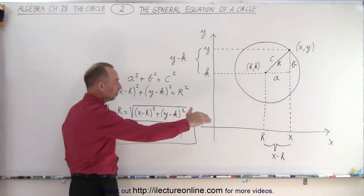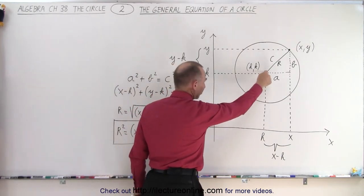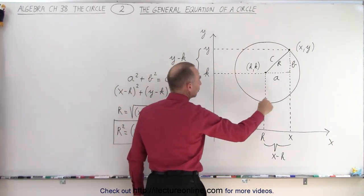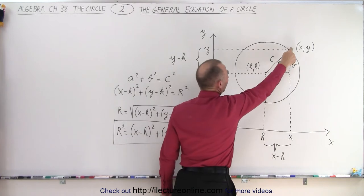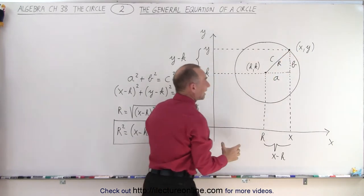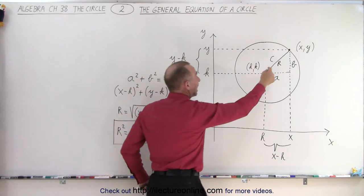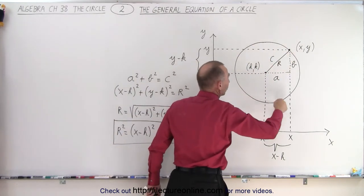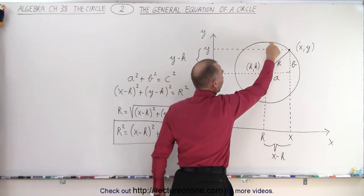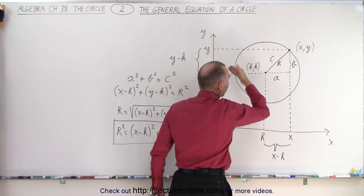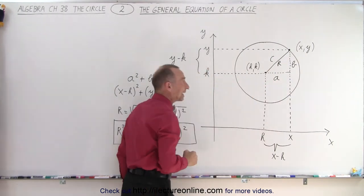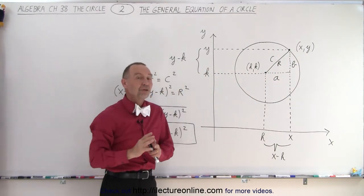So here we have a circle. The circle has a center right there, and notice that there is a point on the circle which we call xy. Why do we call it xy? Because any point on the circle will have coordinates x and y, and of course that will differ in actual value depending upon where we are, but we can simply take it as a general point somewhere on the circle.